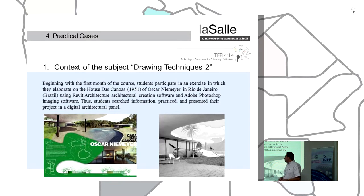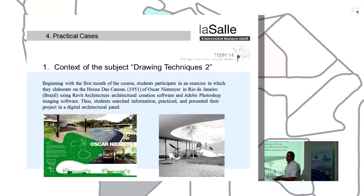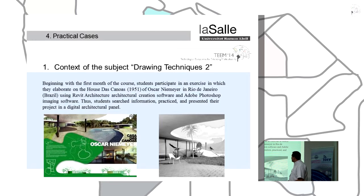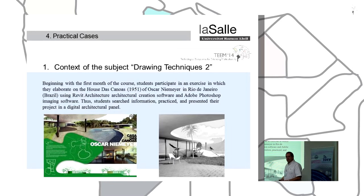Students need to represent some buildings, plans, or information related to architecture or engineering. This year, the students worked with a house associated with a Niemeyer project in Rio de Janeiro. This is one of the houses featured in a James Bond film — another way to engage the students.